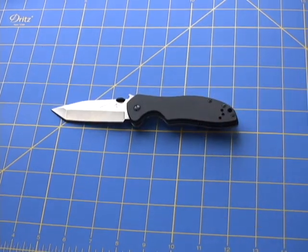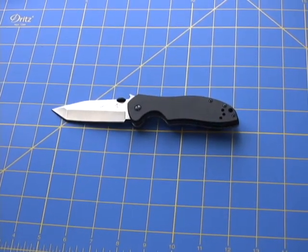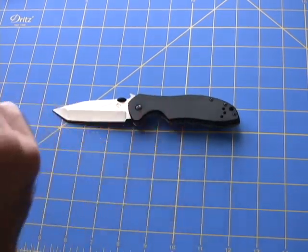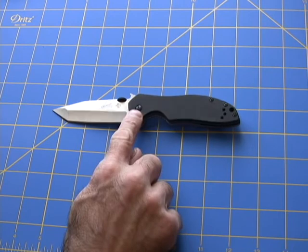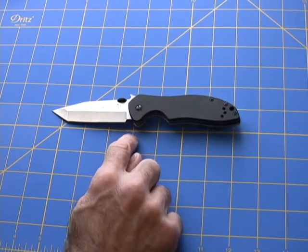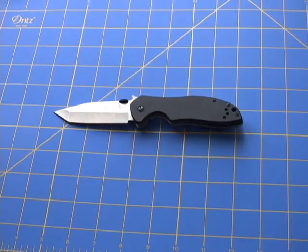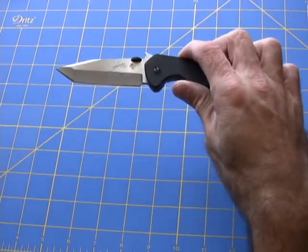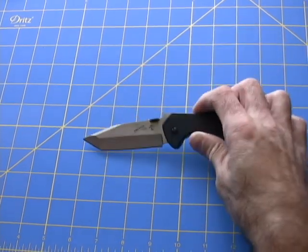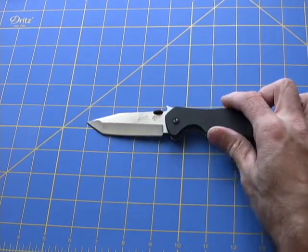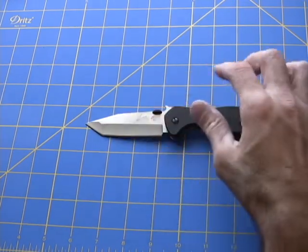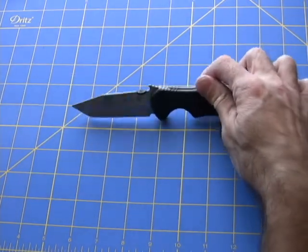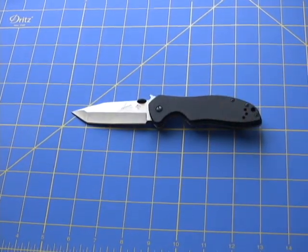Ernie designed these blades, I think there's seven of them in this series. This is the CQC 7k, which has a modified tanto blade. The uses would be for slicing, punching, whatever. Tanto is a very good piercing design.